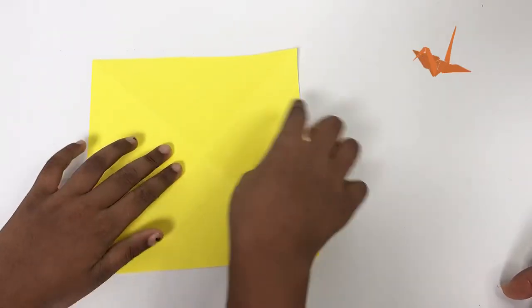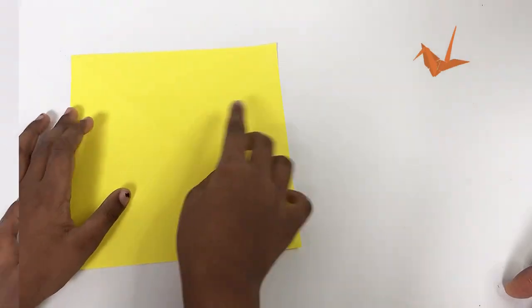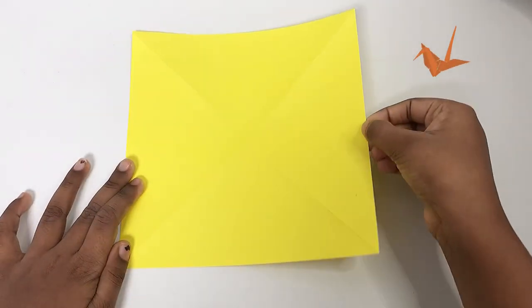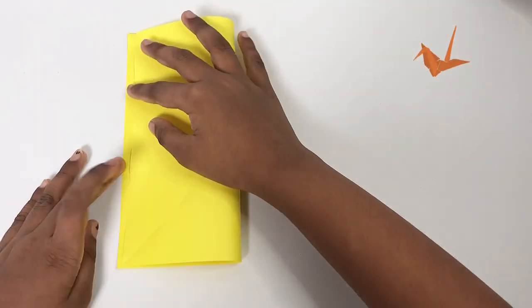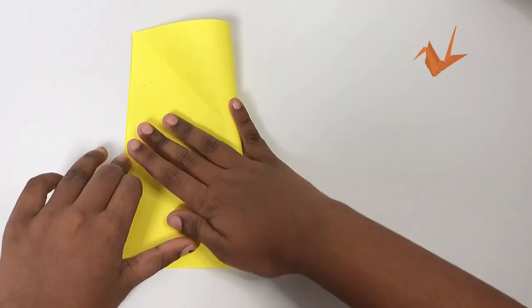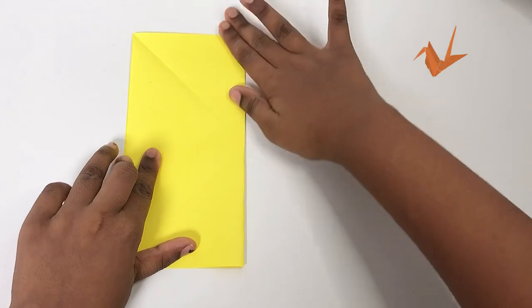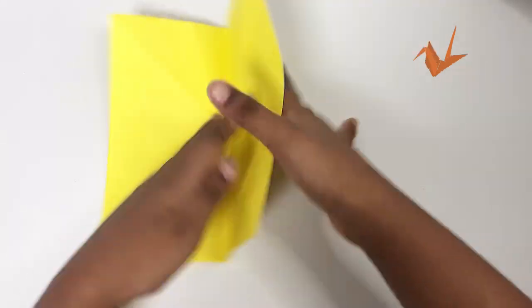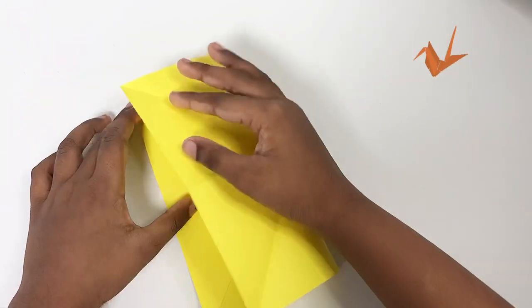Then flip it over, press the center. Next, we need to take this side and fold it to the other side. Make sure it's aligned. Do it on both sides.